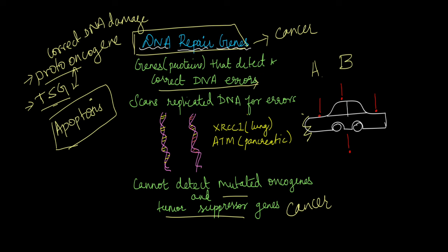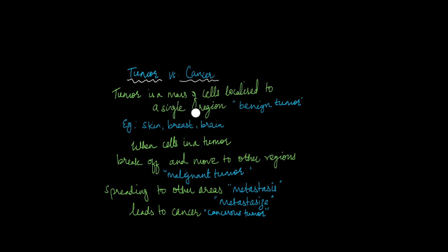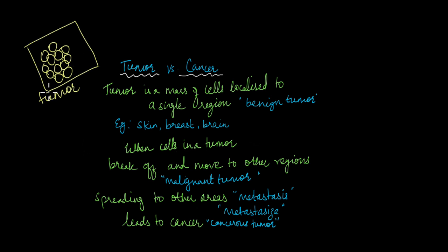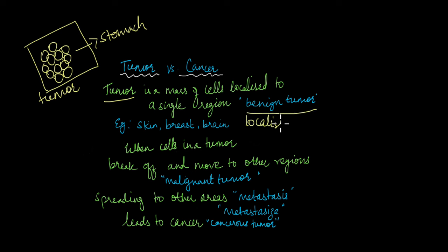Before we end this video, let's understand the difference between a tumour and cancer. When there is uncontrollable cell growth in a specific region, the mass of cells in that region is known as a tumour. If the mass of cells is in one region only — say they are in your stomach and only in your stomach — then such a tumour is known as a benign tumour. Benign means it is localized to a single region, and many of these localized benign tumours can be removed with the help of surgery.